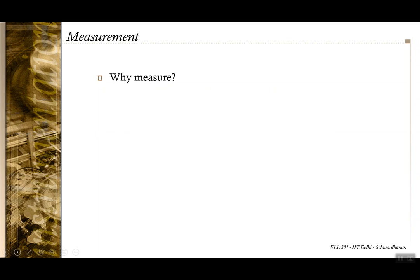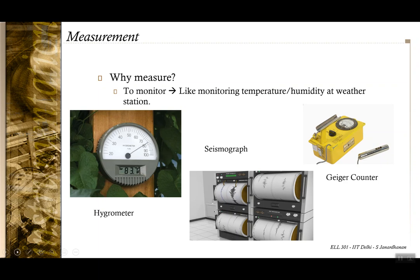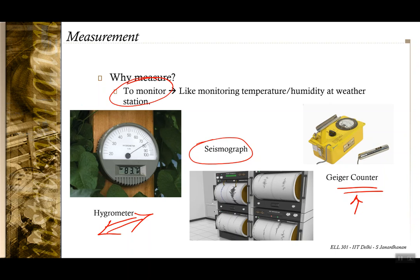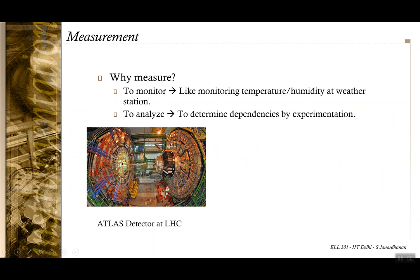The simple answer is that measurement is done first for simple monitoring. For example, if you want to monitor seismographic activity — an earthquake — you can use a seismograph to see how much energy was dissipated. Radioactivity needs to be monitored in a nuclear plant. In winter you measure temperature to decide whether the weather is good enough to go out, or monitor moisture content to predict rain. This is the most primary reason you go for measurements.